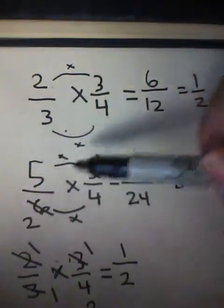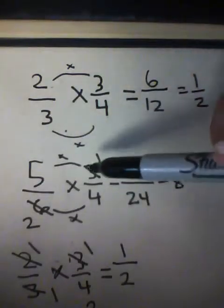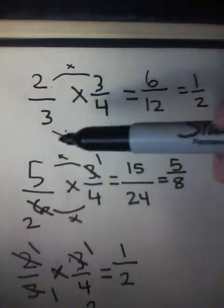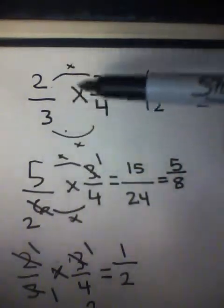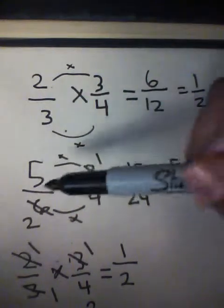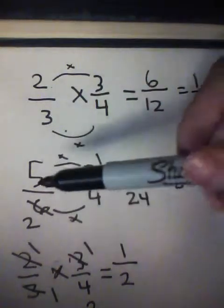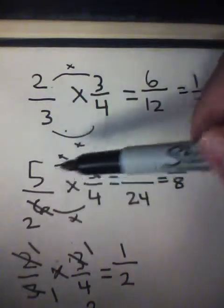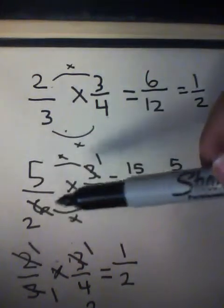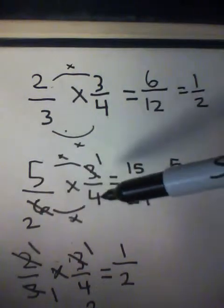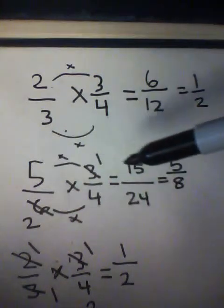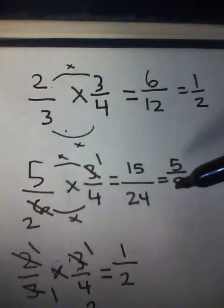The next example is 5 over 6 times 3 over 4. You do the same thing — multiply the numerators and the denominators. First multiply the top: 5 times 3 equals 15. Then 6 times 4 equals 24. After that you reduce it, which equals 5 over 8.